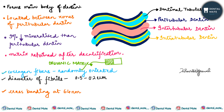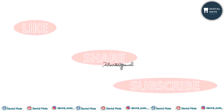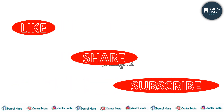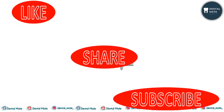There is cross-banding in these collagen fibrils at 64 nanometers. The remaining half is made up of inorganic matrix — hydroxyapatite crystals with a length of about 0.1 micrometers, arranged parallel to the collagen fibers. This covers primary dentine and its types: mantle dentine and circumpulpal dentine. In the coming video we'll be talking about secondary and tertiary dentine, so stay tuned. Thank you.